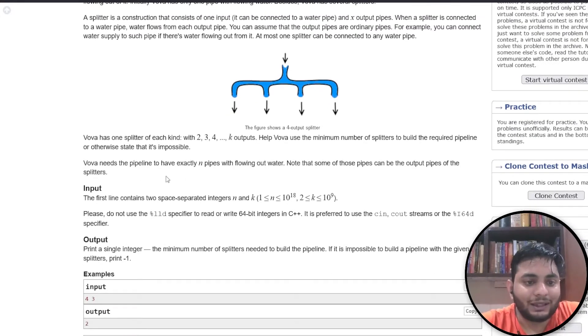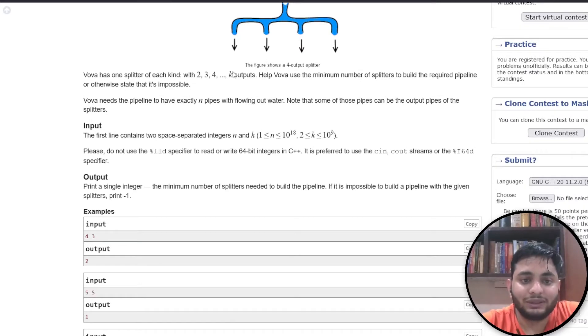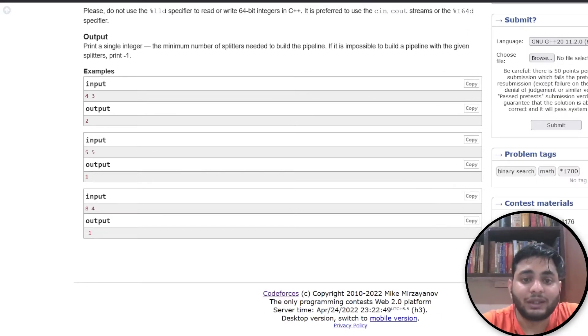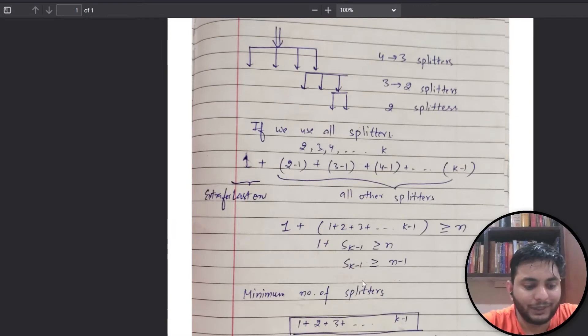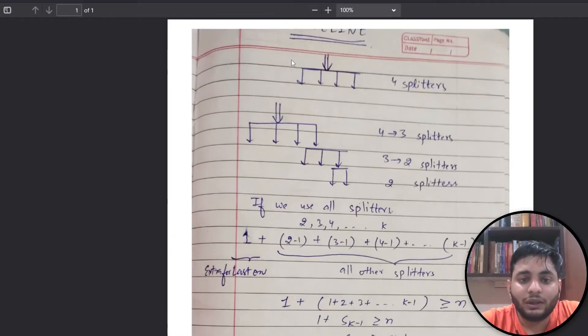We need some sort of arrangement so that we can get n outputs. Whether we can achieve that or not with k splitters. The input is n and k, where k is the maximum number of splitters. Let's see how to do this question and I have created a PDF for simplicity.